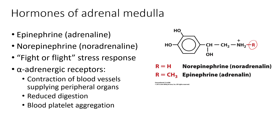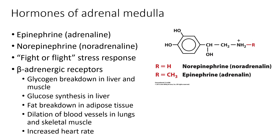Both hormones are involved in the fight-or-flight stress response and act on different classes of receptors. Alpha adrenergic receptors are involved in the contraction of blood vessels supplying peripheral organs, reducing digestion, and blood platelet aggregation — essentially conserving energy during the stress response by only supplying blood, nutrients, and oxygen to vital organs. Beta adrenergic receptors are involved in glycogen breakdown in liver and muscle, glucose synthesis in the liver, fat breakdown in adipose tissue, dilation of blood vessels in the lungs and skeletal muscle, and increased heart rate.